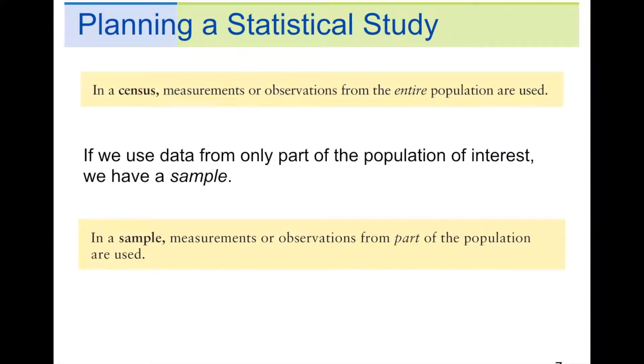So, in a census, measurements or observations from the entire population are used. If you know the census that happens every 10 years, the United States Census, what they do is they send mail to everybody. And then if they don't get the mail back, they actually go to their houses. They want information from everybody, every single person. That's why they do it every 10 years, because it's so time-consuming to get data from millions of people and then deal with all that data. But they do it every 10 years just so we have the information to use. So, a census actually does take the entire population.